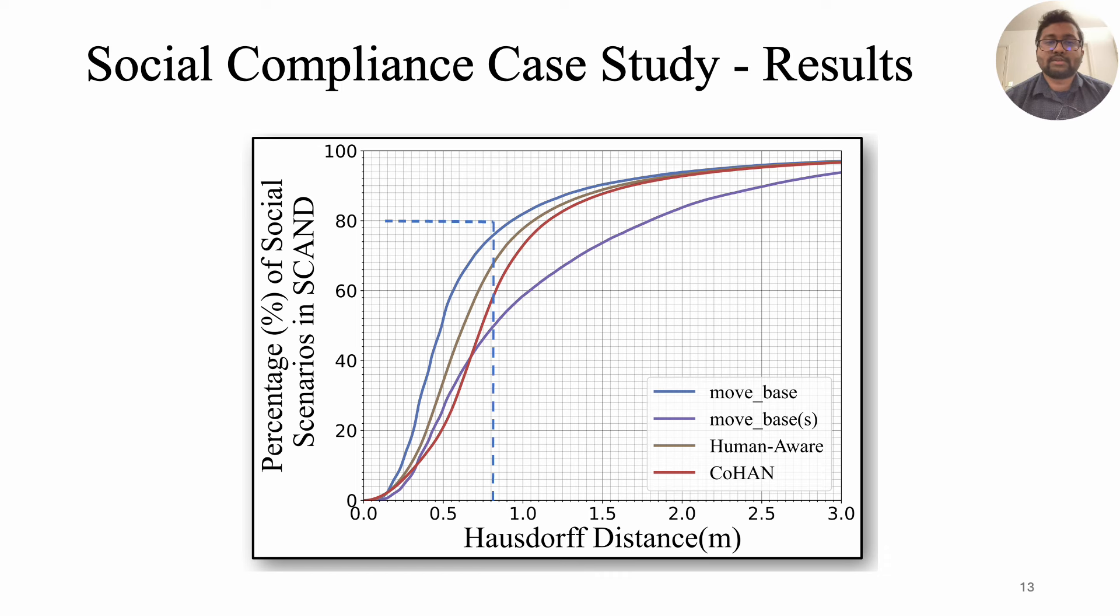Considering trajectories with less than one Hausdorff distance as similar, among the four planners, MoveBase performs the best by achieving 80% alignment with human trajectories demonstrated in SCAND.